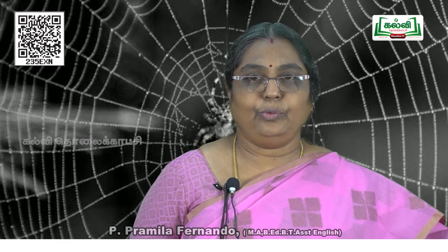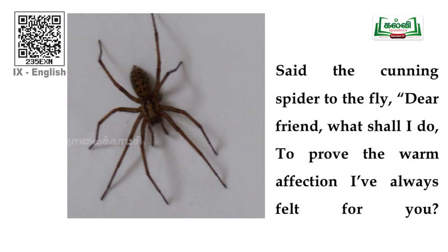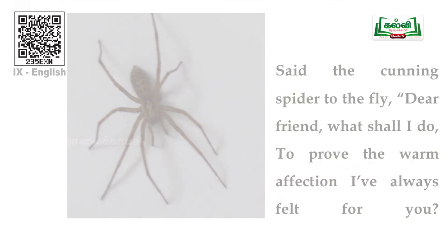Now we can go to the third stanza. 'Said the cunning spider to the fly, dear friend, what shall I do to prove the warm affection I have always felt for you?' In this stanza, he again tries to deceive the fly by talking in a different manner. Here the spider makes the fly feel guilty for constantly refusing his invitation and failing to reciprocate his love.